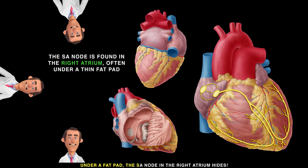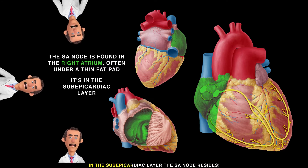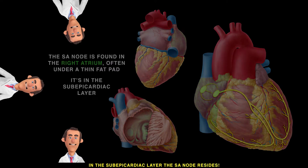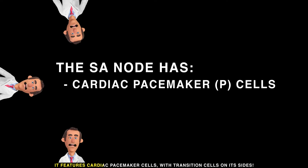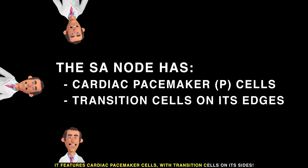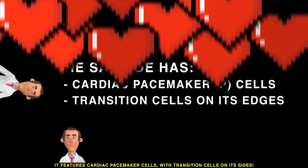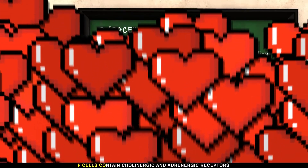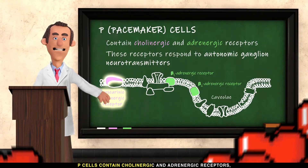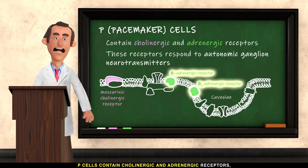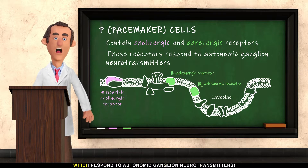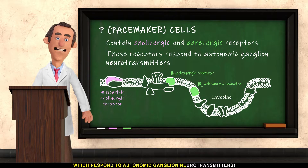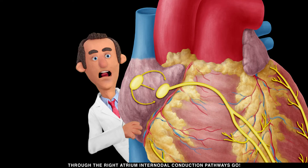Under a fat pad, the SA node hides in the sub-epicardial layer of the right atrium — that is where the SA node resides. It features cardiac pacemaker cells with transition cells on its sides. These pacemaker cells contain cholinergic and adrenergic receptors, which respond to autonomic ganglion neurotransmitters.